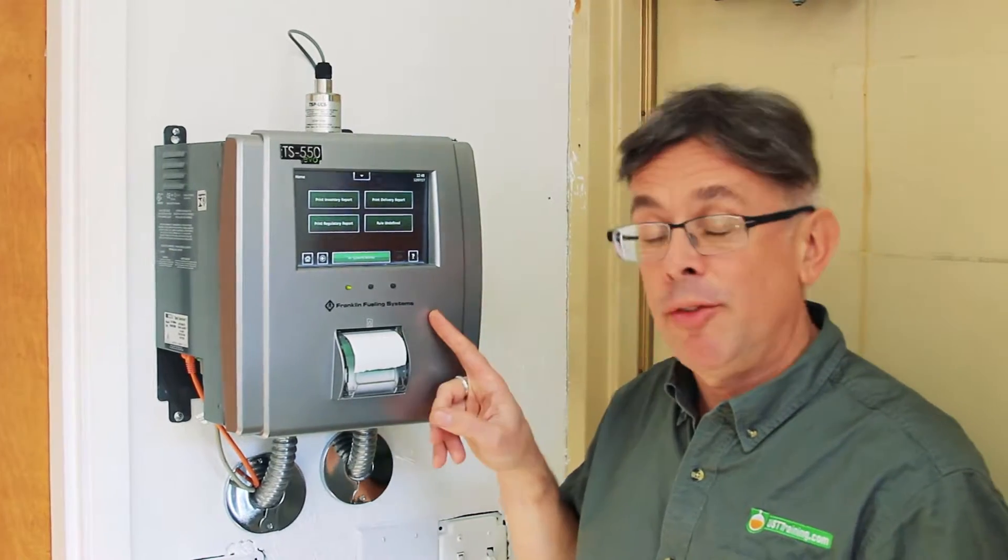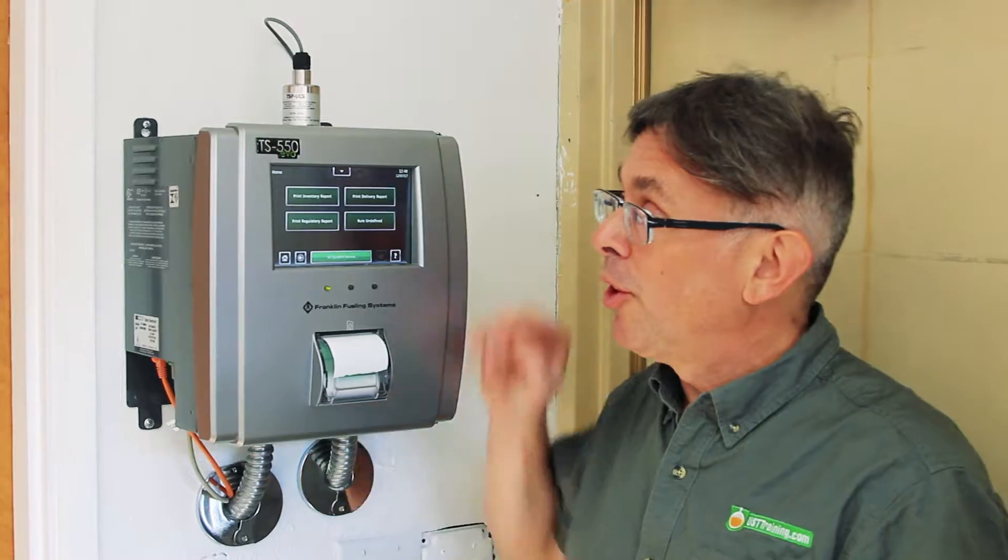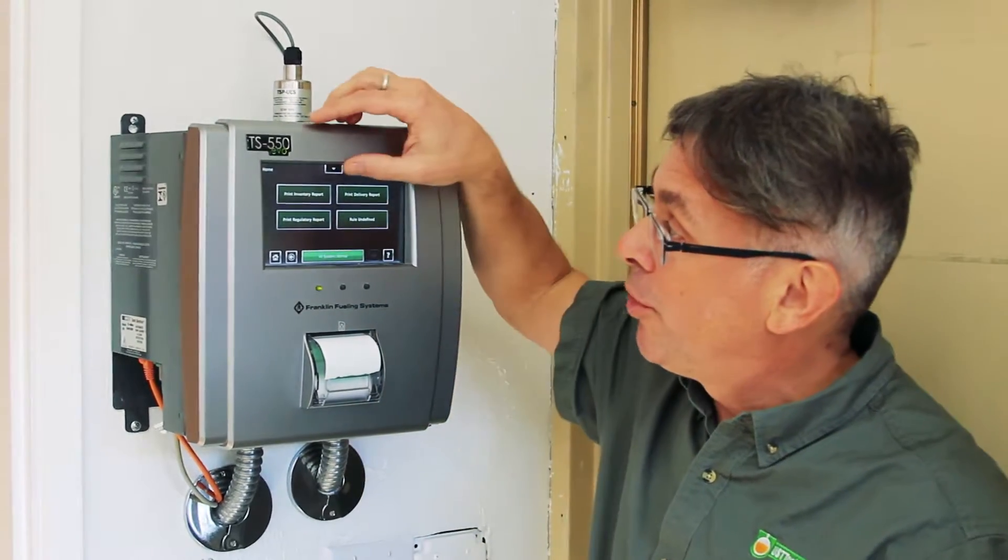We're here at a UST site with an EVO 550 by Franklin Fueling System. This site has double wall interstitial monitoring. It means double wall tanks and piping with sensors.